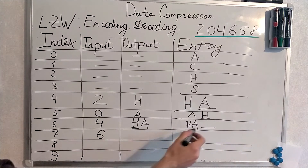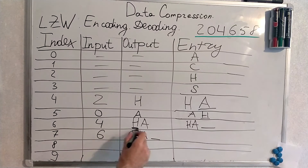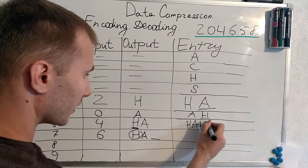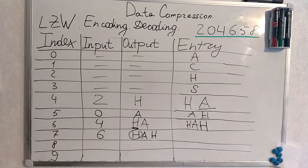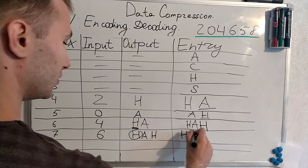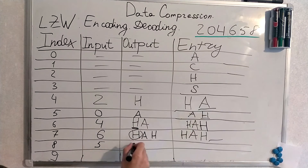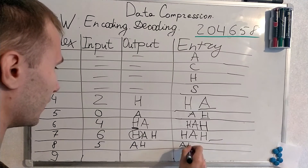We know that the entry for 6 is not ready yet, but we know that it starts with HA and something. We know the entry is not ready yet, but we know the first symbol is used to be added at the end. Thus it's HAH — output is HAH and new entry is HAH-something. What's next? It's 5. Output is AH and new entry is AH-something.